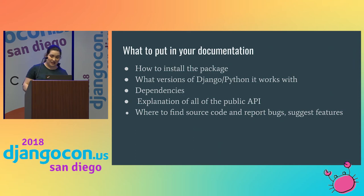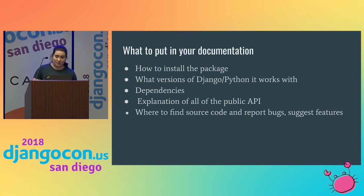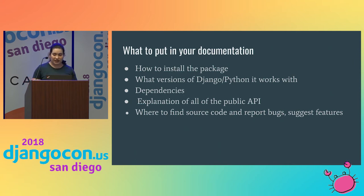Documentation is, at minimum, full sentences in a human language telling your users: how to install your package; what versions of Django and Python it works with; what the dependencies are even if they're automatically installed; all of your app's public API — all of its models, views, and forms, what they're for, what they do, and what the user is expected to do with them; how to install the app in their project; how the user should change their settings and config items to make your package work; and where to find source code and report bugs and suggest features.